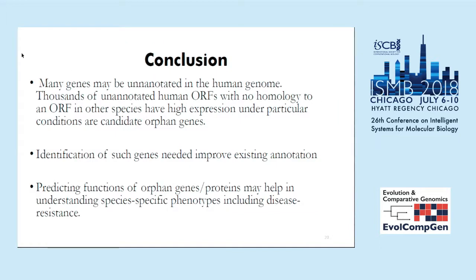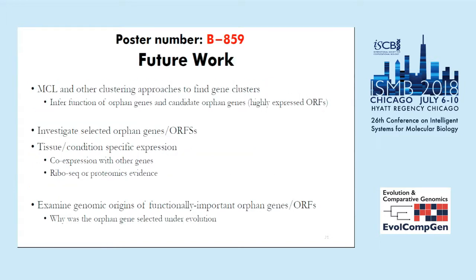In conclusion, I have identified open reading frames expressed highly in selective runs, many of which can be real genes and a subset of which can be orphan genes. Identifying such genes can improve our existing annotation of the human genome, and predicting their function can reveal interesting species-specific traits, including disease resistance and susceptibility. In future work I intend to predict the function of selected orphan genes using approaches like gene network clustering, find evidence of translation using ribosome profiling or proteomics data, and examine why these genes are selected by evolution.